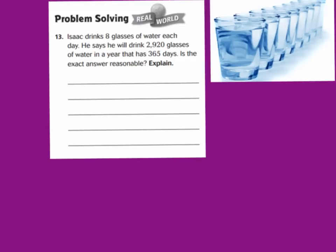Let's jump down to number 13, and it's a problem-solving question. It reads, Isaac drinks 8 glasses of water each day. He says that he will drink 2,920 glasses of water in a year that has 365 days. Is this exact answer reasonable? Explain. Now, we need to figure out what they're asking us. It says that each day he's going to drink 8 glasses for 365 days. That's a multiplication problem. We have 8 times 365.